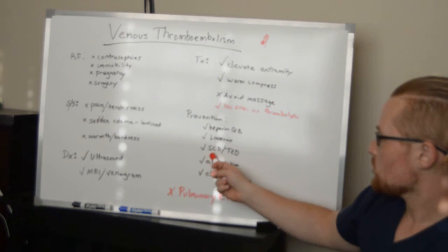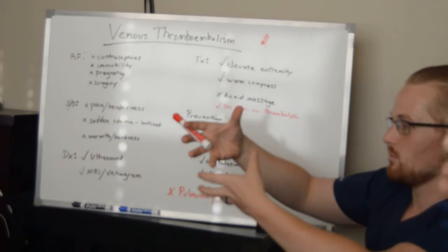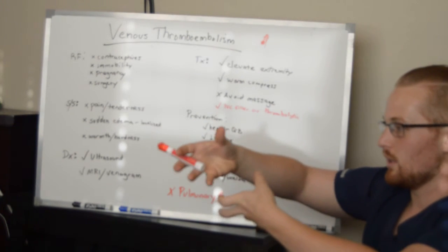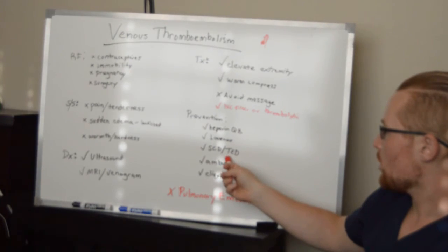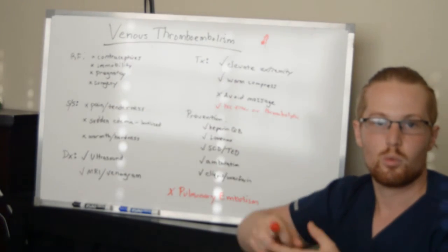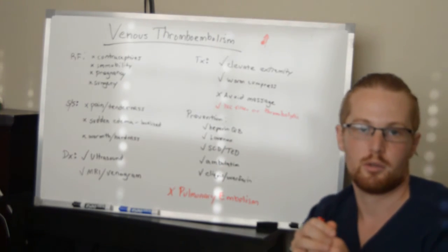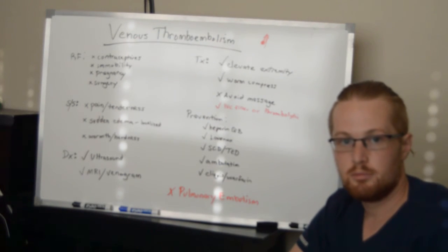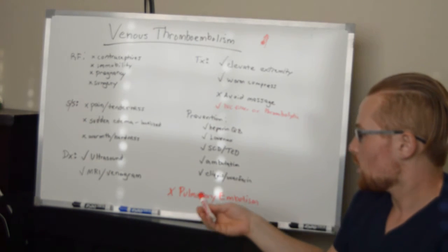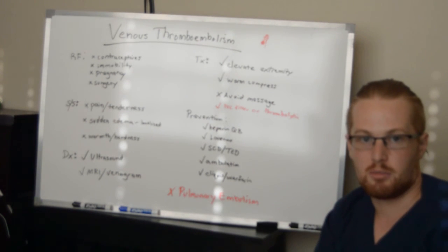And the other would be SCDs, which is a sequential compression device, which is a machine that pumps air around the legs and makes the blood flow. Or TED hose, which is just tights which give the vessels better contractility and improve blood flow. So this is venous thromboembolism, and in another video I'll talk more about pulmonary embolism.